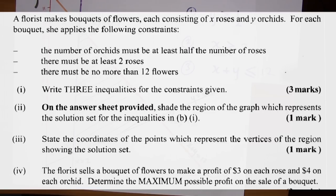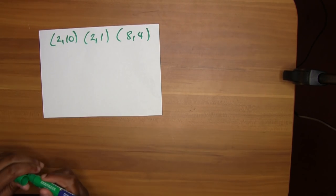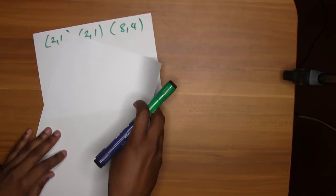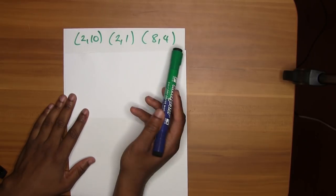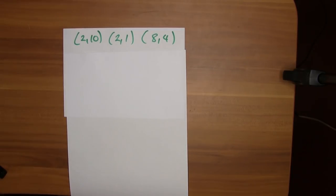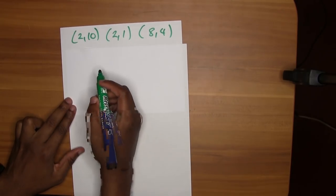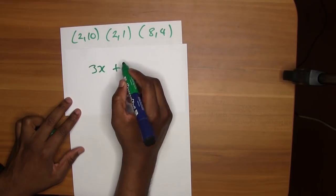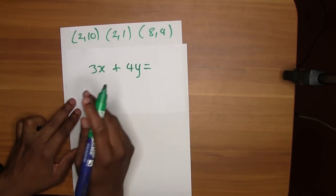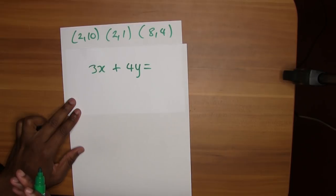Now this is the part of the question that's really interesting. The florist sells a bouquet of flowers to make a profit, three dollars on each rose, four dollars on each orchid. Determine the maximum possible profit on the sale of a bouquet. So these are the vertices of the wanted region, the shaded region, and we need to determine the maximum profit. What you need to do is generate what I will call the profit equation based on what they gave us. So three dollars on each rose, three by x, plus four dollars on each orchid, four by y, equals the profit.